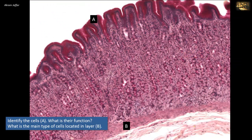Identify cells A, their function, and the main cell type in layer B. The lining epithelium is simple columnar epithelium, and in this PAS stain, which stains carbohydrates including mucins, the simple columnar epithelium is composed of mucous cells. These mucous cells cover the luminal surface and the walls of the pits, and they are packed with cytoplasmic mucogene granules, taking the deep magenta color. This is the lining epithelium of the stomach, where these mucous cells secrete mucus that protects the epithelium from autodigestion.